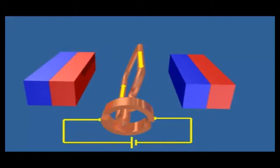Now you can see the brushes have recontacted the commutator and the current is going in the opposite direction through the armature.